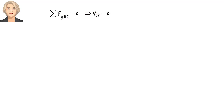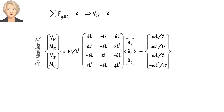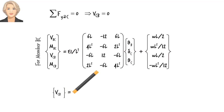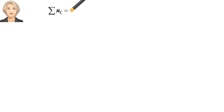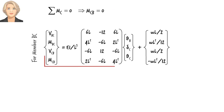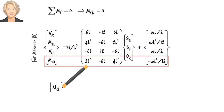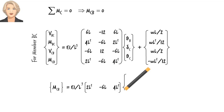Here is our second equilibrium equation. We need V_CB in matrix form. Here are the equations for member BC, and V_CB — the third equation in the set — can be easily extracted from the matrix. To write the third equilibrium equation, we need M_CB. Here it is, and therefore this becomes our third equilibrium equation.